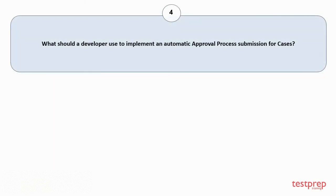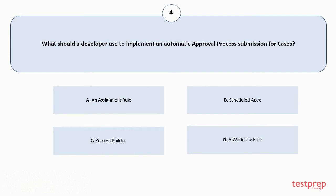Question number 4: What should a developer use to implement an automatic approval process submission for cases? Your options are: A. An assignment rule. B. Scheduled Apex. C. Process Builder. D. A workflow rule. The correct answer is option C.